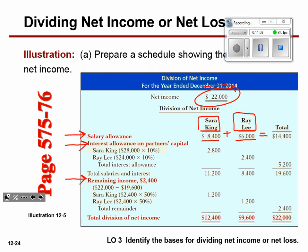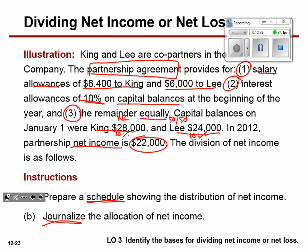Then for interest allowance: Sarah King has a $28,000 capital balance times 10%, which equals $2,800. Ray Lee has $24,000 times 10%, which equals $2,400. Together that's $5,200 in interest allowances. So we've done salary and we've done interest — now it's time to share the remaining net income.